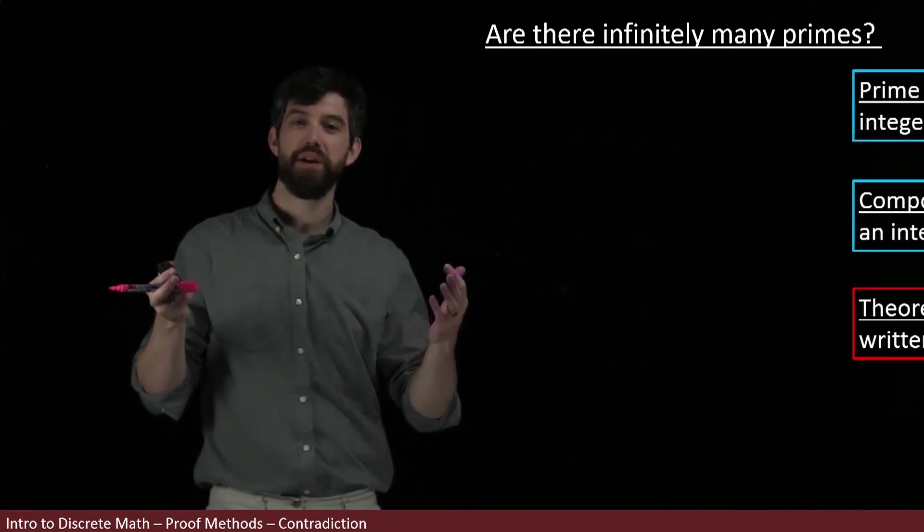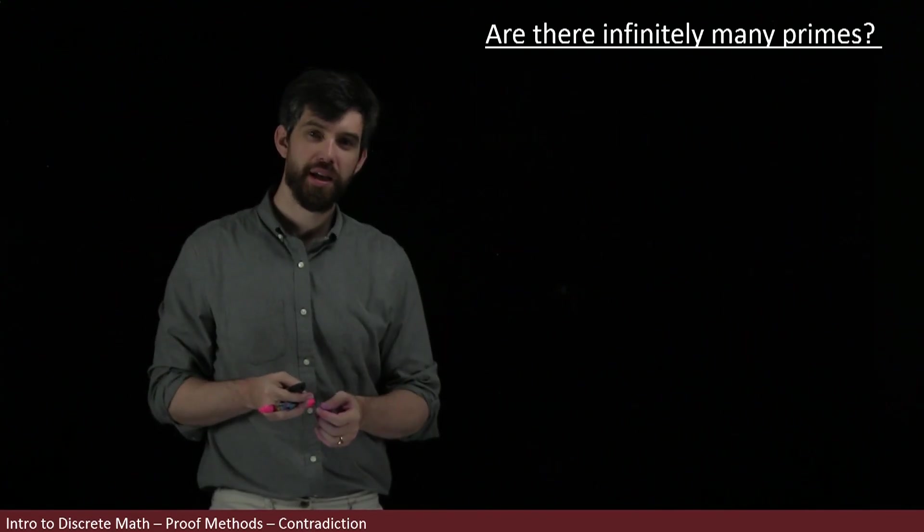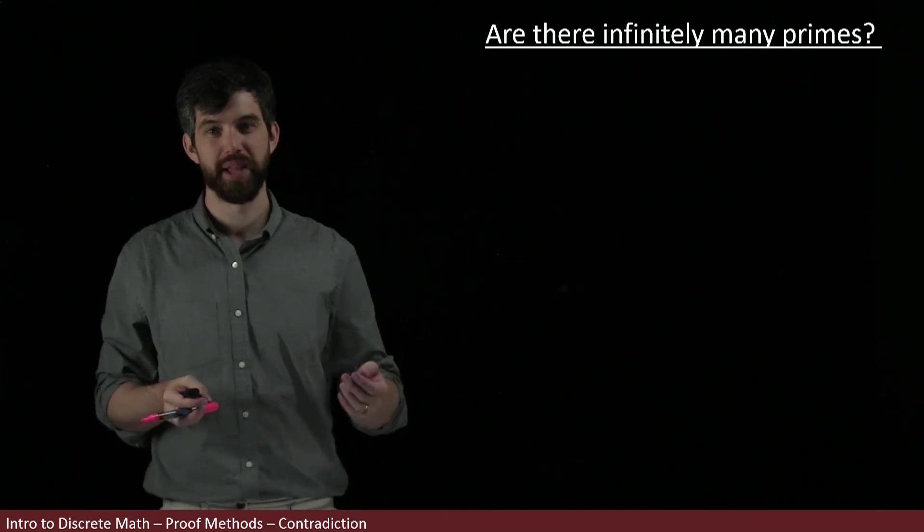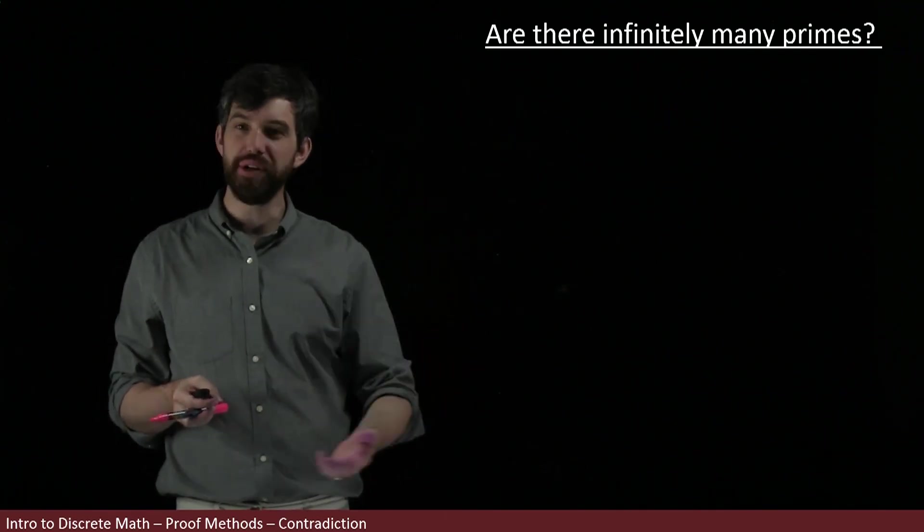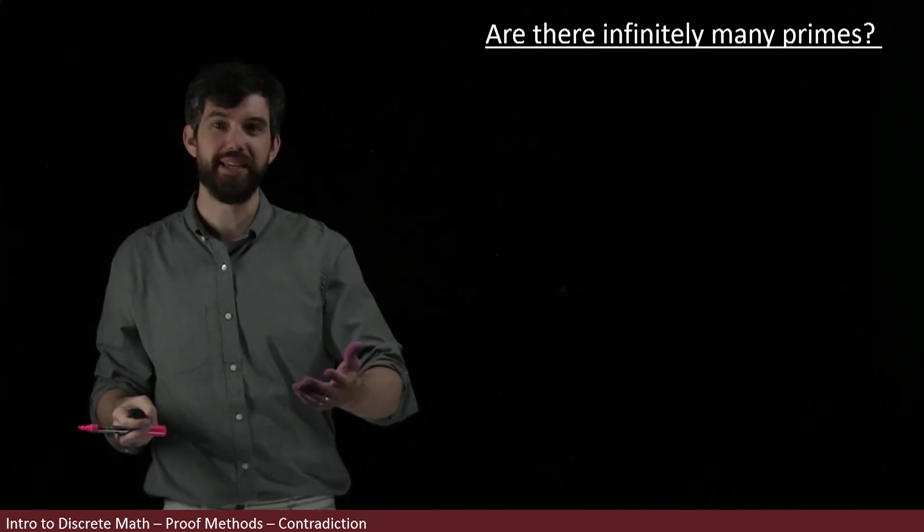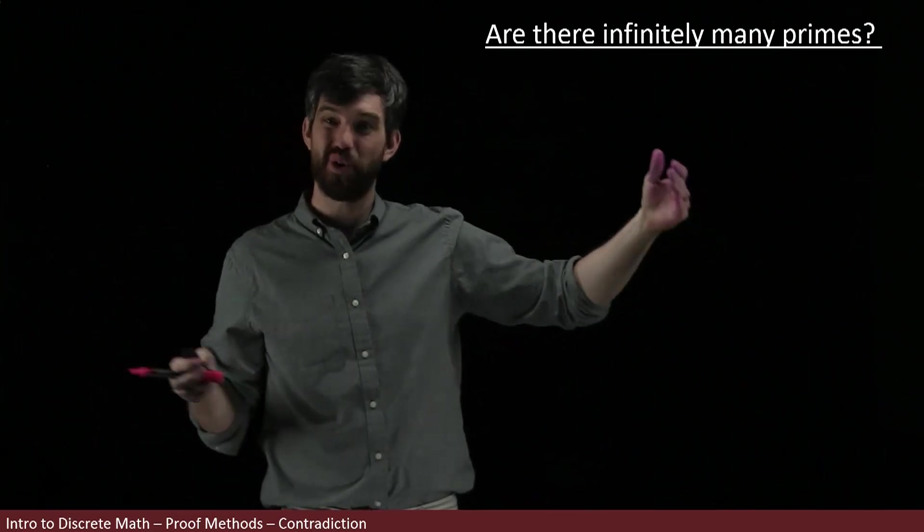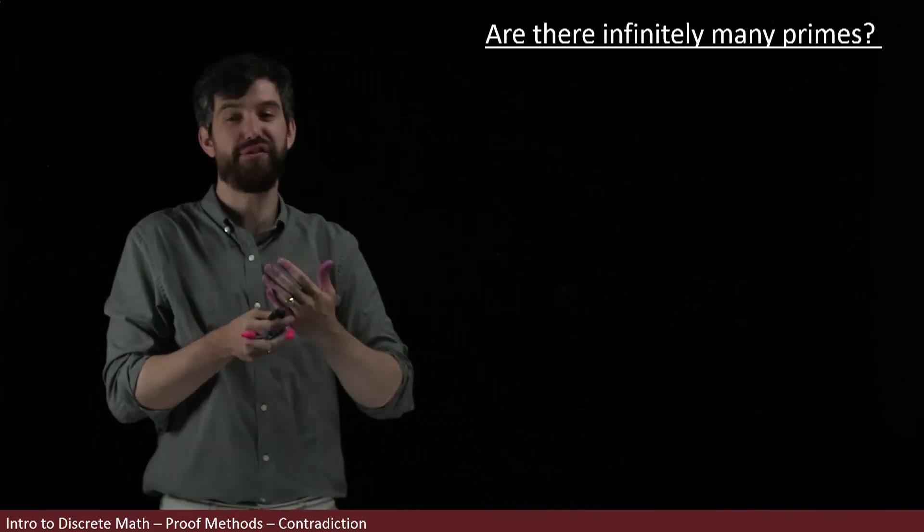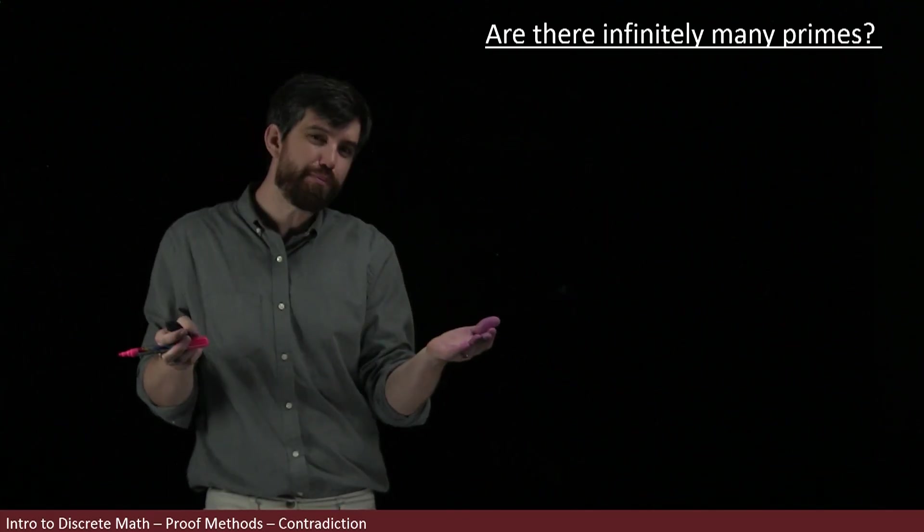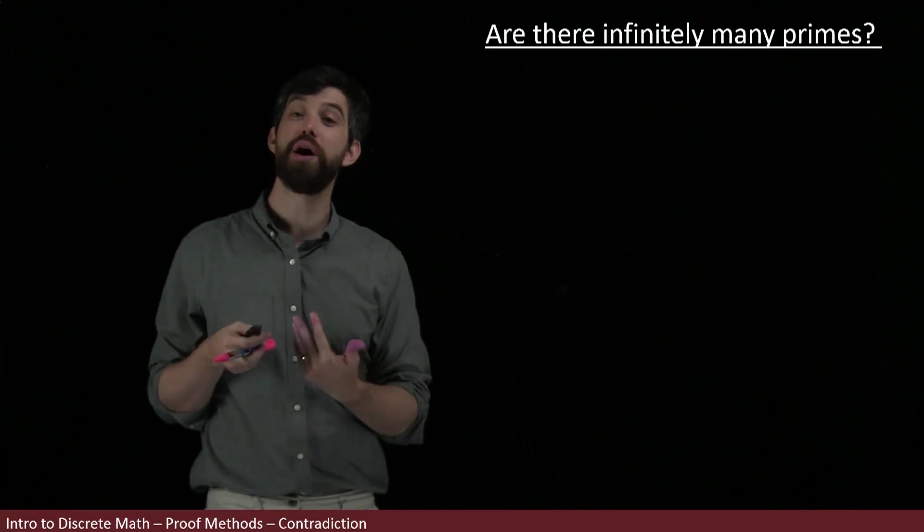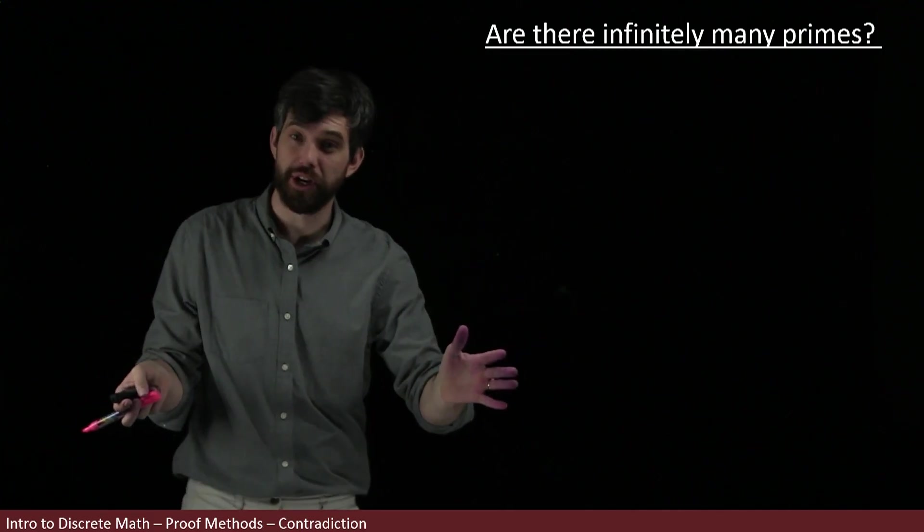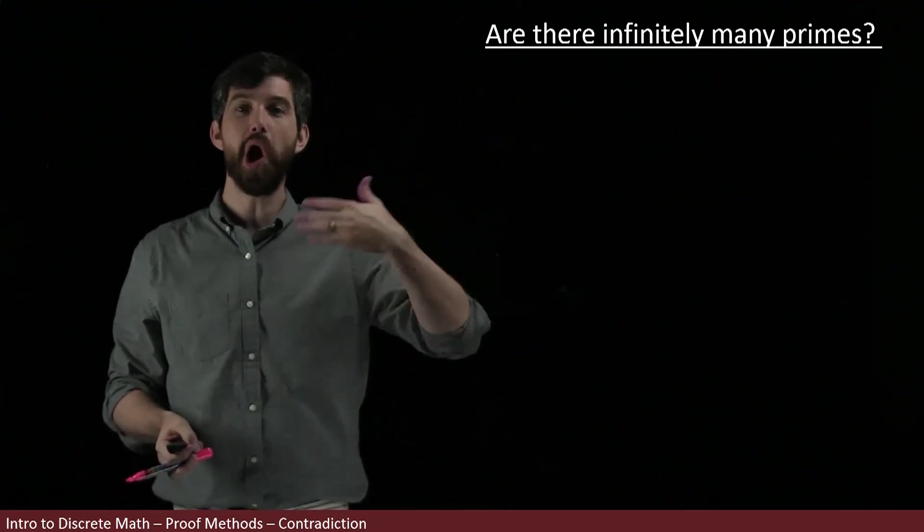Now let's think about how we might prove this claim. I could go on for a while finding new prime numbers—19, 23, and carry on that process for a really long time. But just because I'm always able to keep finding new prime numbers doesn't really prove there are infinitely many. Proving this directly is a little bit challenging. It's going to be much easier to prove it by contradiction.